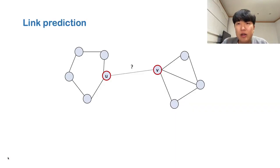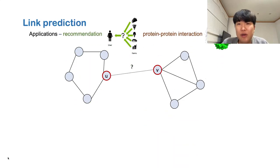Link prediction is a task of predicting the existence of an edge between two nodes in a graph. Link prediction has many applications such as recommendation or protein-protein interaction.